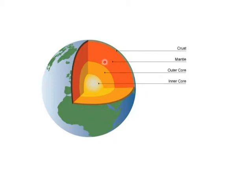Then we have the mantle, which is the thickest layer and also one of the most important, because the mantle is rather strange — it behaves like both a liquid and a solid. It's what we call plastic. That doesn't mean plastic like your milk bottles are made out of, but it means exactly that: it behaves like a solid and a liquid. If you hit it with a hammer, it would shatter, and if you press it slowly, it would flow. You may be familiar with plasticine or Play-Doh — they behave a bit like that.